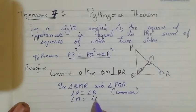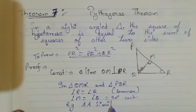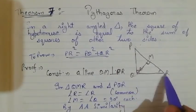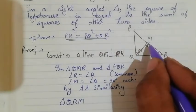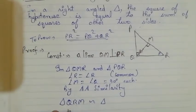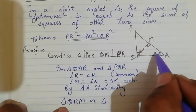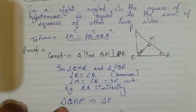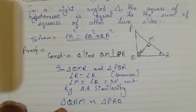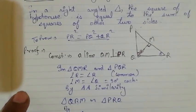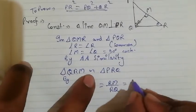Angle QMR equals 90 degrees, and angle Q in the original triangle also equals 90 degrees. By angle-angle similarity, triangle QMR is similar to triangle PQR. By BPT, we can write: QR/PR = RM/RQ = QM/PQ. Taking the first two ratios and cross-multiplying gives us QR² = RM × PR. This is our first equation.